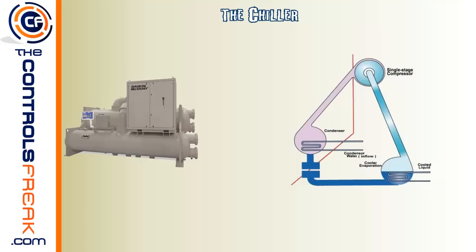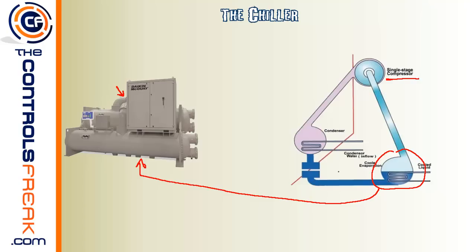First stop on the list is going to be the chiller. You can't have a chiller plant without the chiller, so let's start there. Right now we've got a picture here of a McQuay centrifugal chiller. There are many different types of chillers, but we're going to stick with the centrifugal chiller and briefly talk about its three main parts: the compressor, mounted here and on the back side, the evaporator section which is typically the bottom barrel, and the condenser section which is the upper barrel.